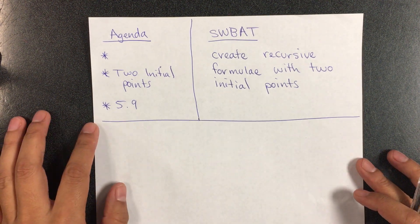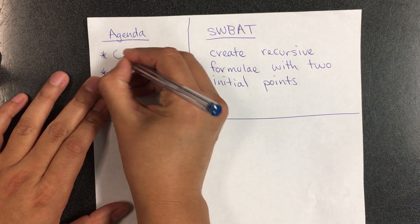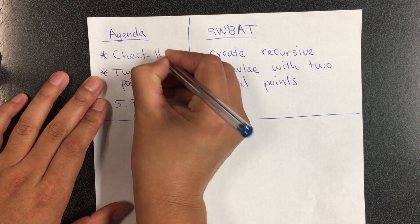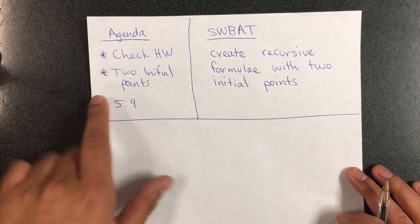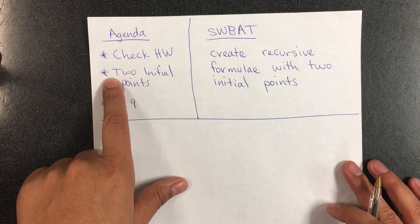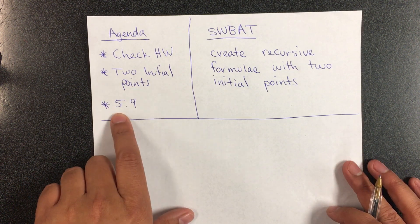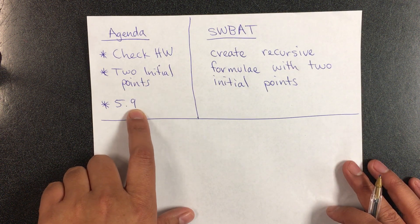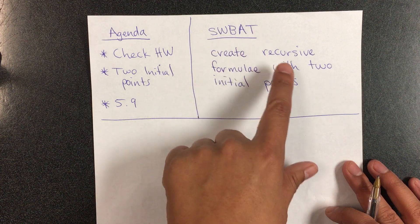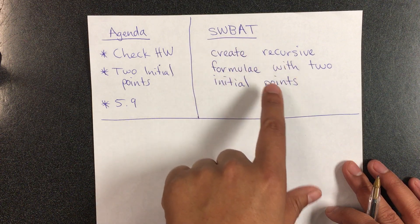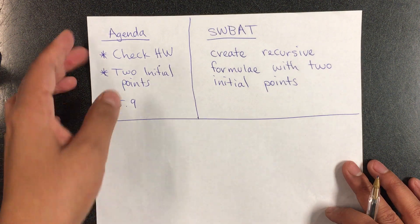Hello students, today's agenda is to check homework. I will be learning about the recursive formula with two initial points, and you will be able to work on 5.9. Today students will be able to create recursive formulae with two initial points.